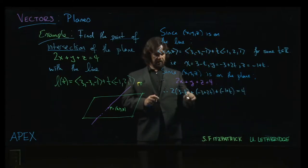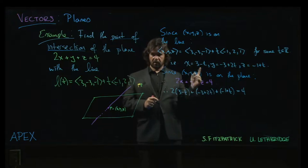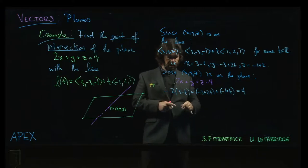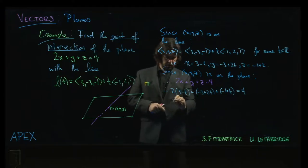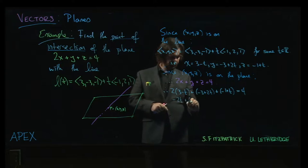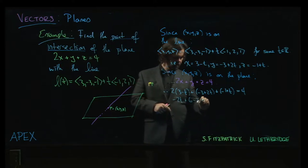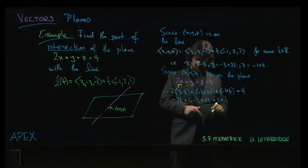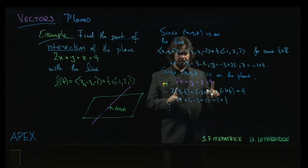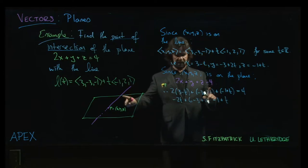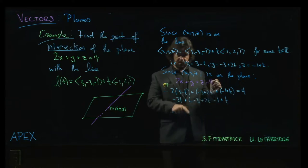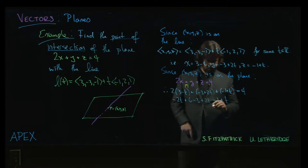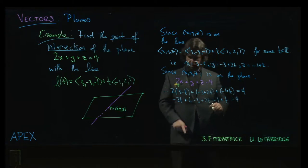Well, now we just have an equation involving just a single variable, right? This parameter t. So, let's think about what we get when we clean up here. So, we have -2t plus 6 minus 3 plus 2t minus 1 plus t. If that line happened to be parallel to the plane, all the t's would cancel out here and you wouldn't be able to solve. But, we're in luck. That's not going to happen. That's going to be equal to 4.